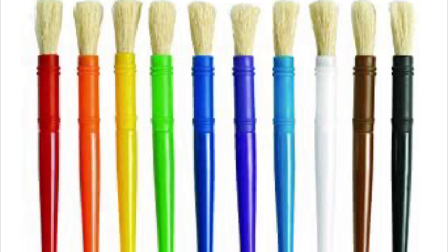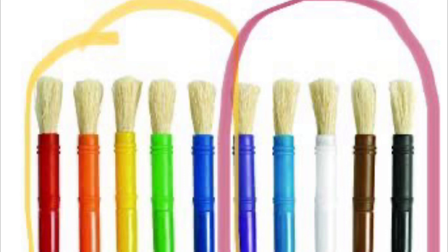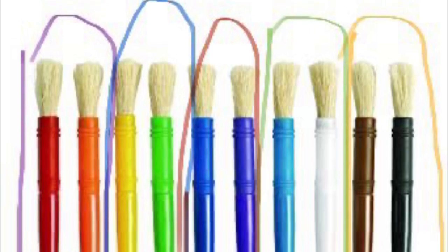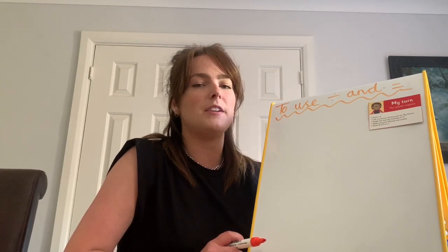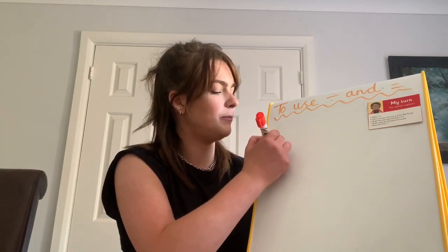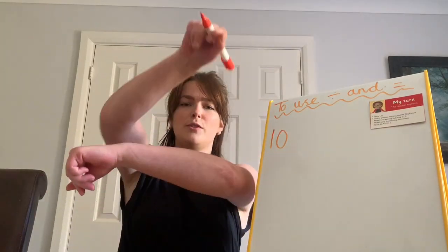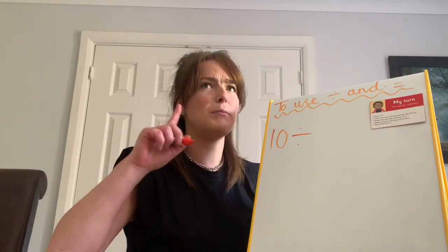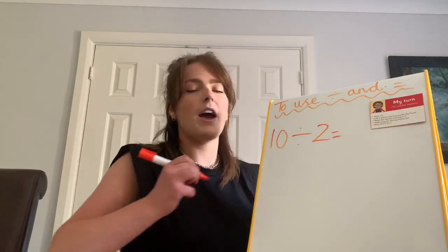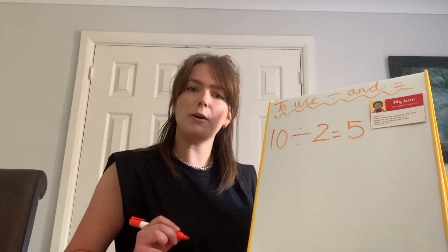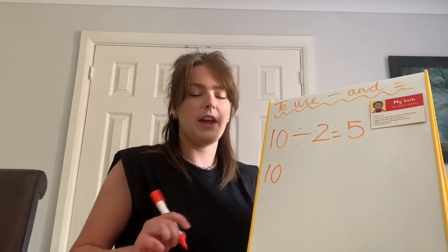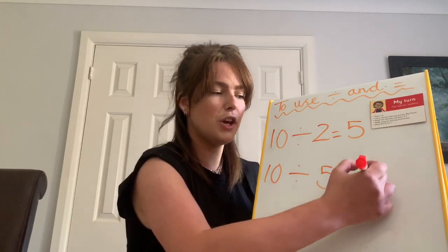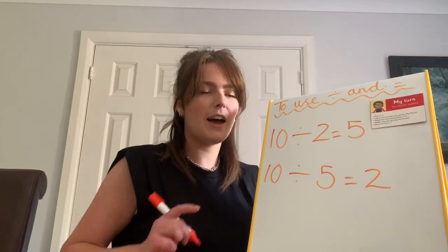How did you get on? I found ten paintbrushes. I split them into two equal groups and had five in each group. I could then share them between five groups and have two in each group. Let's have a go at writing that as a number sentence. We had ten objects. Our learning objective — we are using division. So, ten divided by two, sharing between two groups first, gave me five in each group. And ten divided by five gave me two in each group. That's how you would write it as a number sentence.